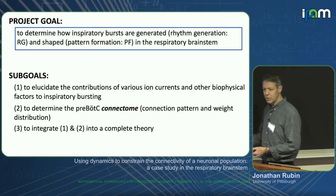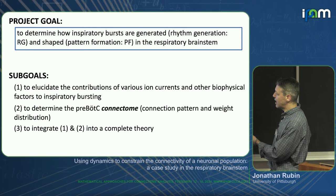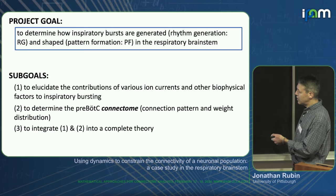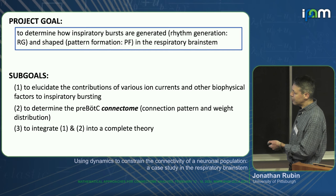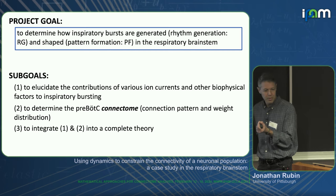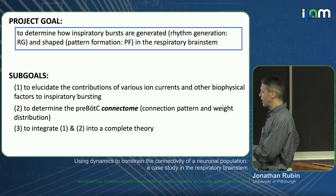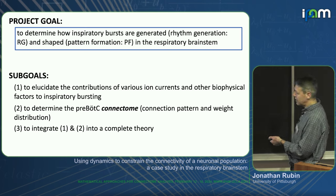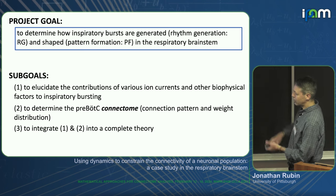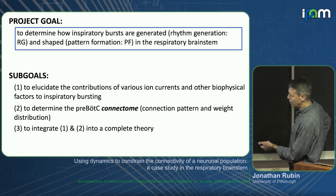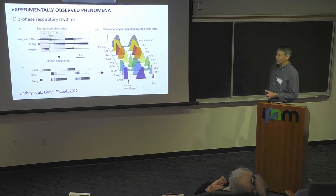Let me break the sub-goals into pieces. This is the goal of the whole project, not necessarily just this talk. It's divided into a couple of levels: the contributions of ion currents and other biophysical factors to the bursting patterns the neurons generate, then the connectivity within the pre-Bötzinger complex — the yellow circled region responsible for the inspiratory part of the respiratory rhythm — and then putting those two together.